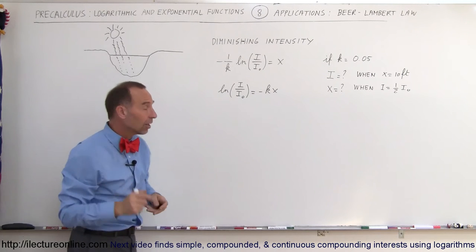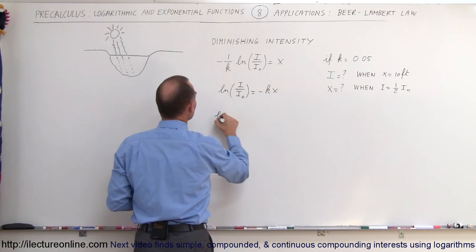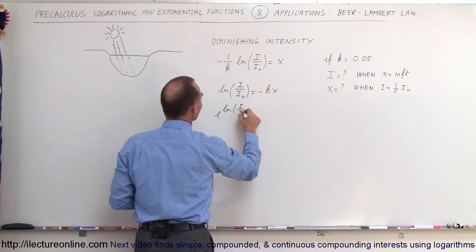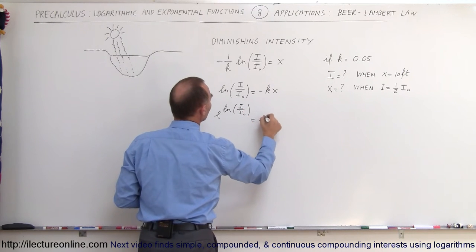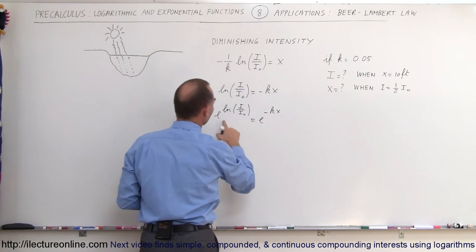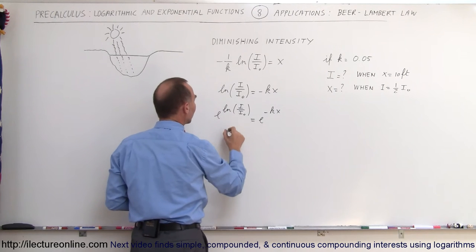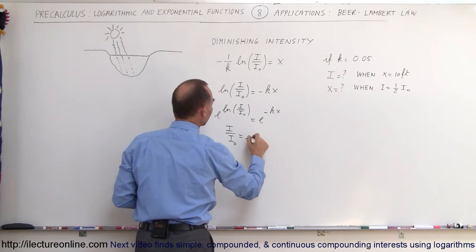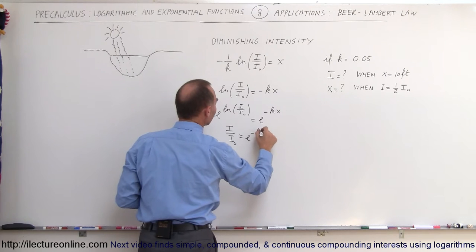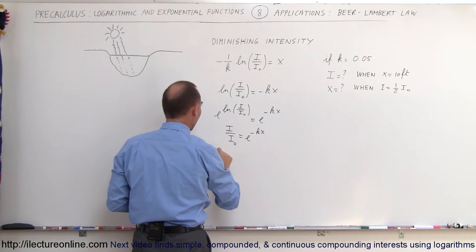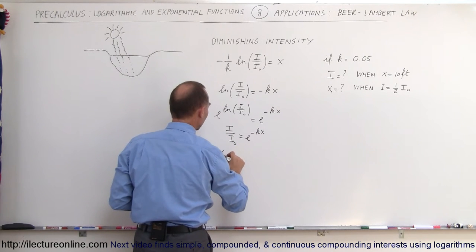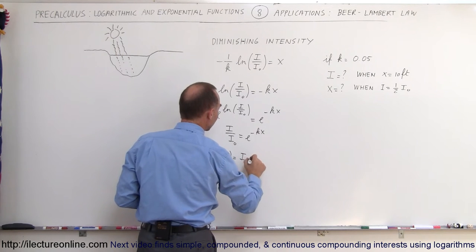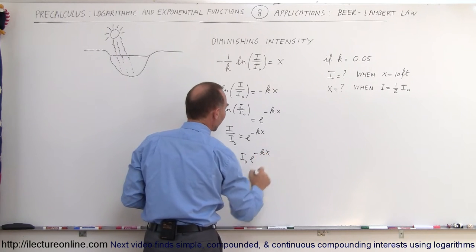Now we take the anti-log of both sides: e raised to ln(I/I₀) equals e to the -kx. The exponential and natural log negate each other, leaving I/I₀ = e^(-kx). Finally, solving for I, we get I(x) = I₀ × e^(-kx).